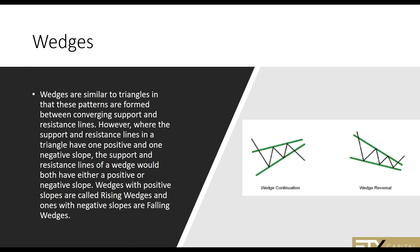Then we have wedges, which are almost identical to triangles. Wedges are similar to triangles and are formed between converging support and resistance lines. However, where support and resistance lines in a triangle have one positive and one negative slope, the support and resistance lines in a wedge would have either both positive or both negative slopes. Wedges with positive slopes are called rising wedges, and the opposite are falling wedges.